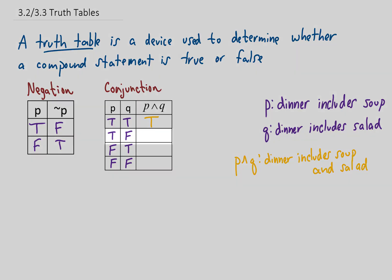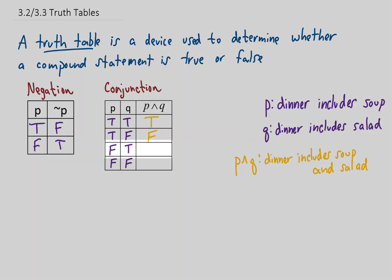In the second row, we sit down to dinner and they bring soup, but because there's a false in the q column, that means they don't bring a salad. So the statement 'dinner includes soup and salad' is not true, because they did not bring you salad. For the third row, we're not getting soup but we are getting salad, but still the statement that dinner includes soup and salad is false.